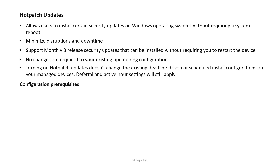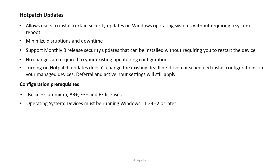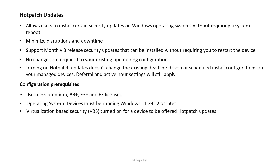What are the configuration prerequisites? First, check the license — you need Business Premium, A3+, E3+, or F3 licenses. The operating system must be Windows 11 24H2 or later. Virtualization-Based Security (VBS) must be turned on for the devices to be offered hot patch updates.